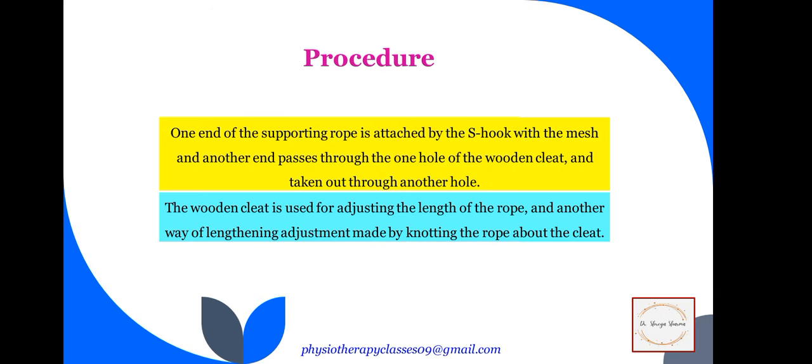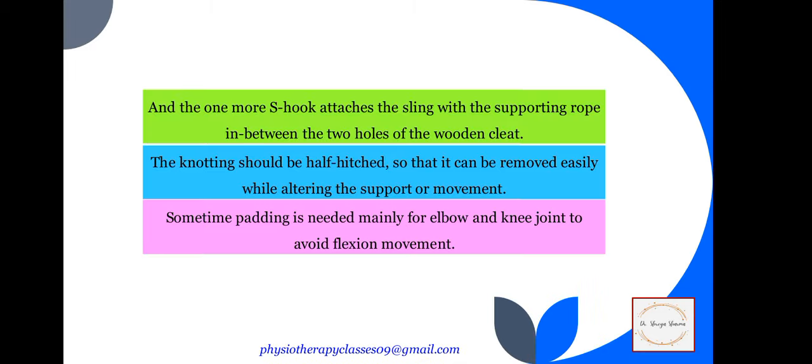Regarding the procedure: one end of the supporting rope is attached by the S-hook to the mesh, and the other end passes through one hole of the wooden cleat and is taken out through another hole, so we can adjust the length. The wooden cleat is used for adjusting the length of the rope. Another S-hook attaches the sling with the supporting rope in between the two holes of the wooden cleat. The knotting should be half-hitched so it can be removed easily. Sometimes padding is needed, mainly for elbow and knee, to avoid flexion movement.